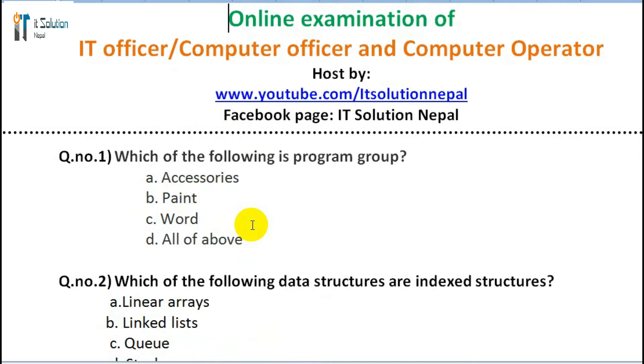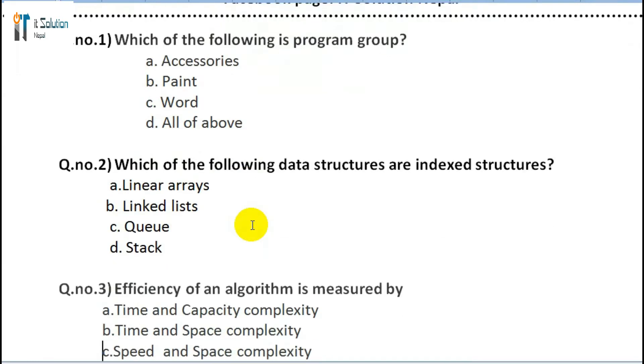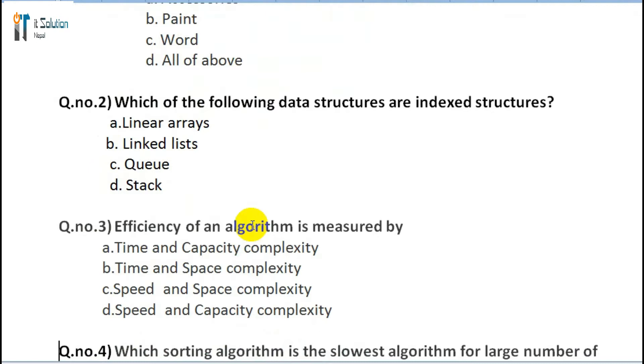Question 1: Which of the following is a program group? A) Accessories, B) Paint, C) Or B, D) All of above. Question 2: Which of the following data structures are indexed structures? A) Linear arrays, B) Linked list, C) Queue, D) Stack. Question 3: Efficiency of an algorithm is measured by: A) Time and capacity complexity, B) Time and space complexity, C) Speed and space complexity, D) Speed and capacity complexity.